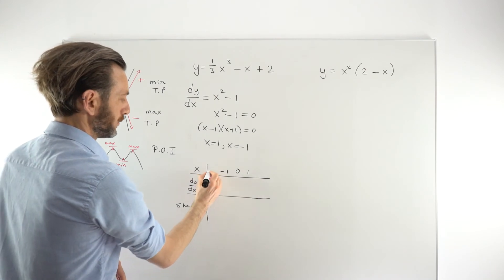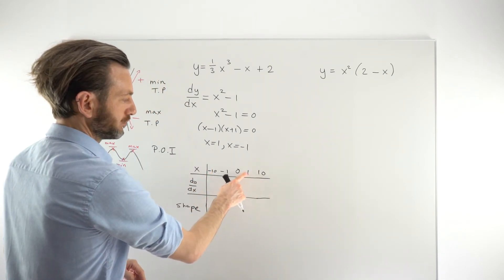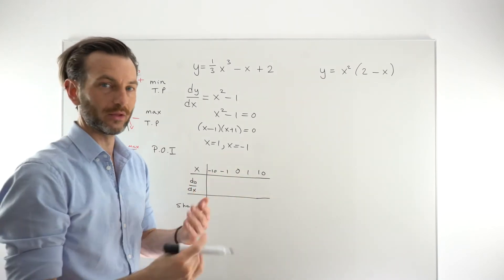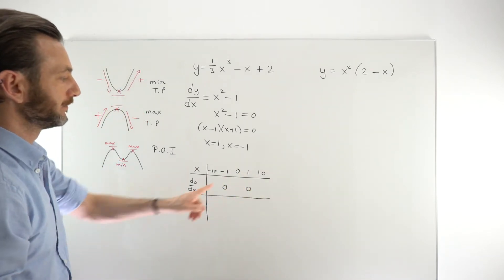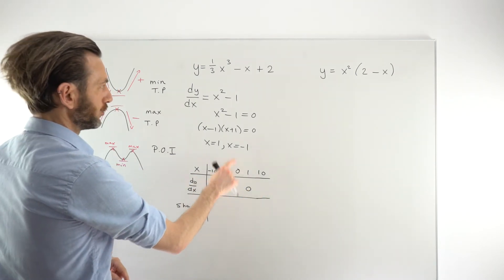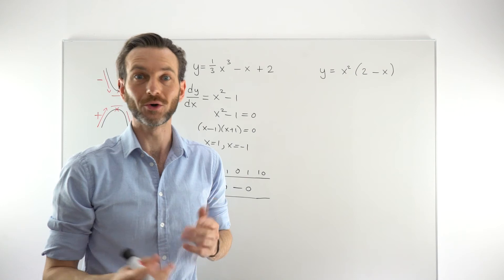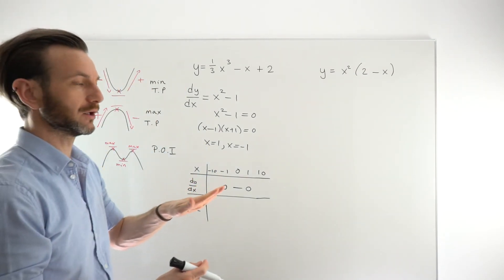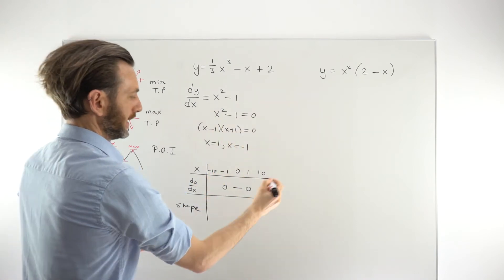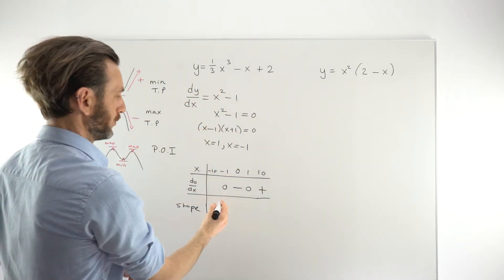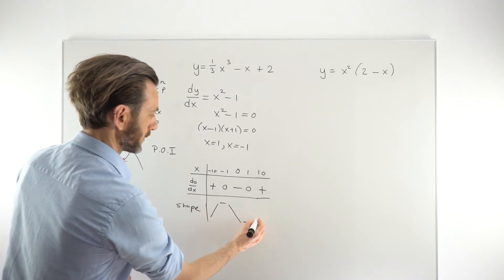I'll choose 0 for the value between the two stationary points, minus 10 to the left of minus 1, and positive 10 to the right of 1. You can choose any numbers as long as they're in the correct positions. At x equals 0, the derivative is 0 squared minus 1, which is negative. At x equals 10, it's 100 minus 1, which is positive. At x equals minus 10, it's also 100 minus 1, which is positive.